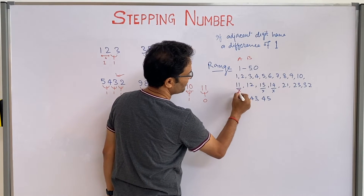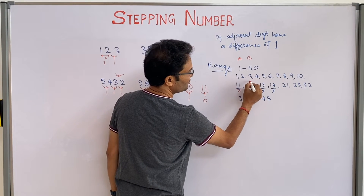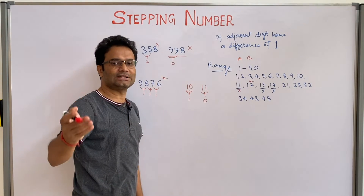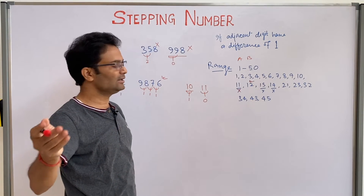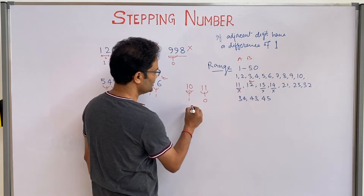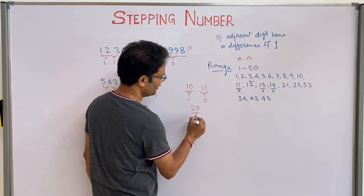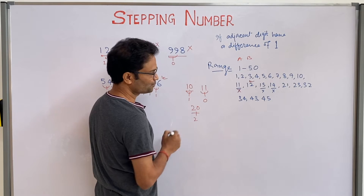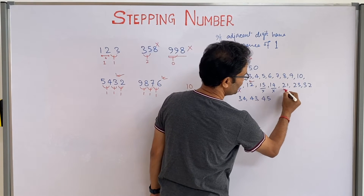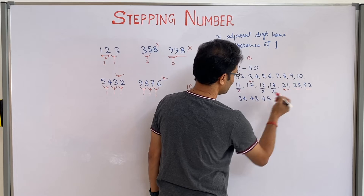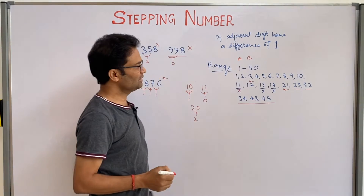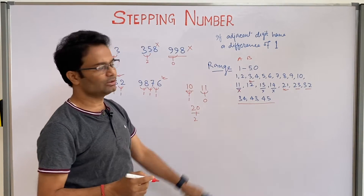11 is not a stepping number. 12 is a stepping number, 13, 14, 15, 16, 17, 18, 19 are all stepping numbers. 20 is not a stepping number because the difference is 2. 21 is a stepping number, 23 is a stepping number, 32 — so these are the stepping numbers between 1 to 50.